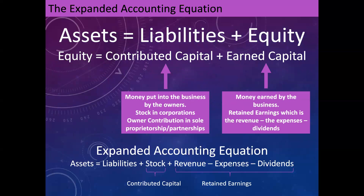That leads us to the expanded accounting equation: assets equal liabilities plus equity. We know that equity equals our contributed capital plus our earned capital. Contributed capital is money put in by the owners — stock for corporations, or an owner's investment or contribution for sole proprietorships and partnerships. And earned capital, like I said, is money earned by the business — we call that retained earnings, which is our revenue (money we earn from selling stuff) minus expenses (costs incurred from operating our business) minus dividends. Dividends are the amount that business owners take out as compensation for owning the business.